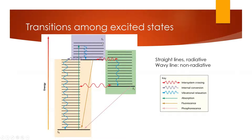We saw last time the Franck-Condon principle that talks about which vibrational modes are allowed, and saw that there are many possible modes that could be excited. This has to do with the overlap between the ground state and the excited state vibrational modes on top of the electronic states. When the molecule gets to an excited state, it will vibrationally relax to the vibrational ground state by emitting this energy, usually in the form of heat. In most cases, the molecules will fluoresce back down to the ground state. We'll talk about inter-system crossing, where molecules convert from the singlet state to the triplet state, and once in the triplet state, they must phosphoresce back to the ground state. The solid lines are the radiative transitions — absorption, fluorescence, phosphorescence — and the squiggly lines are non-radiative transitions.